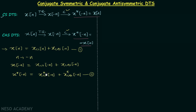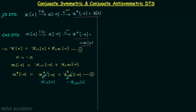Now we make two substitutions in equation 2. Since xcs(n) is conjugate symmetric, we know xcs*(-n) = xcs(n), so we replace xcs*(-n) with xcs(n). Since xcas(n) is conjugate anti-symmetric, xcas*(-n) = -xcas(n), so we replace xcas*(-n) with -xcas(n). Therefore equation 2 becomes: x*(-n) = xcs(n) - xcas(n).